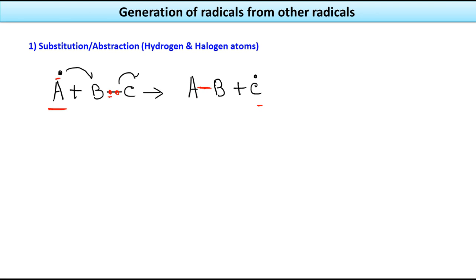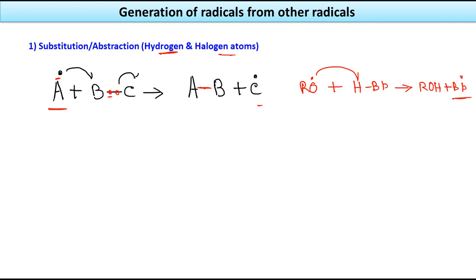A practical example of abstraction: RO• reacts with HBr. The RO• captures the hydrogen, forming RO–H and releasing Br•. Here RO• is A•, H is B, and Br becomes the new radical C•. This is called hydrogen abstraction.